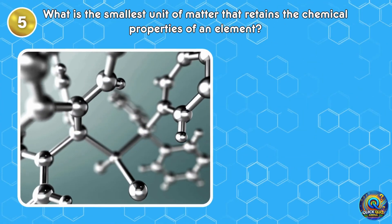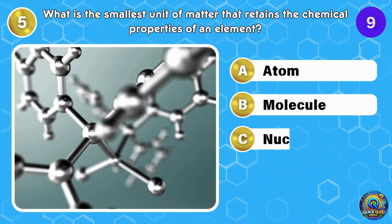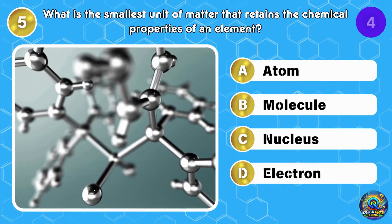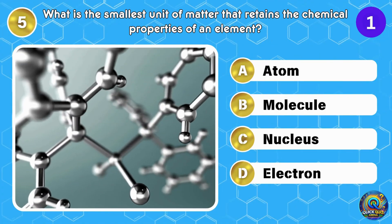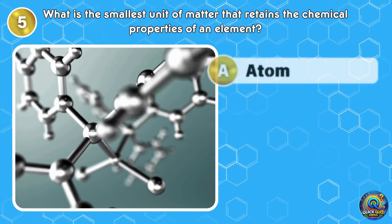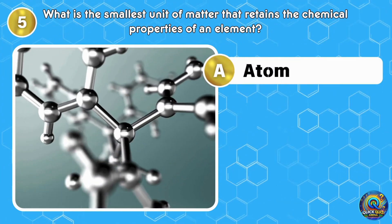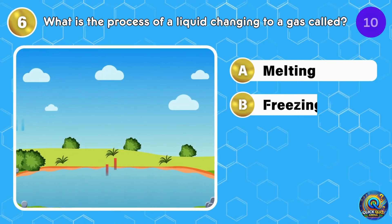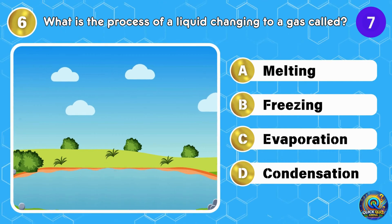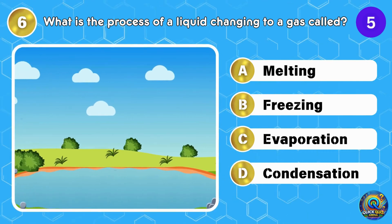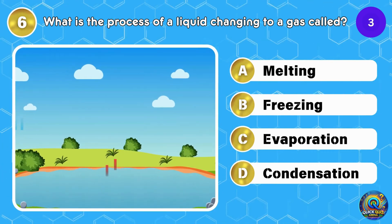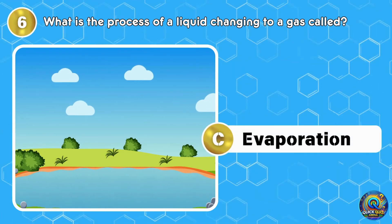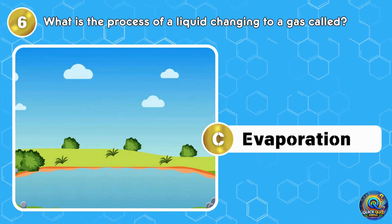What is the smallest unit of matter that retains the chemical properties of an element? The answer is atom — the tiny building blocks of everything around you. What is the process of a liquid changing to a gas called? The answer is evaporation. Poof, it's gone into thin air. Let's evaporate to the next question.